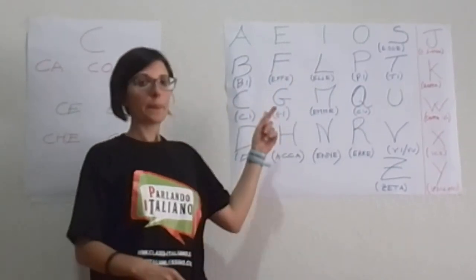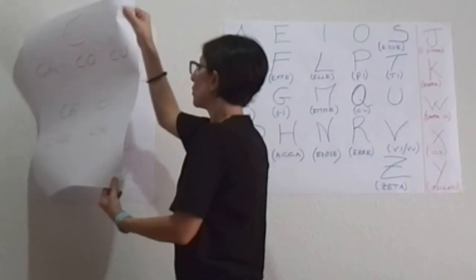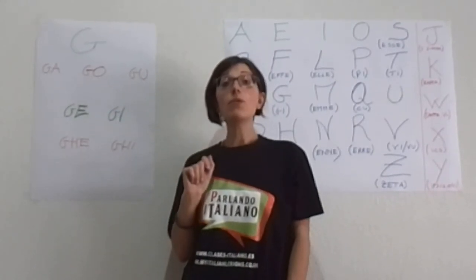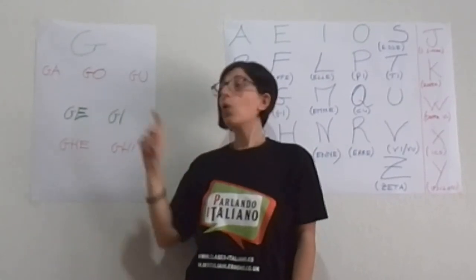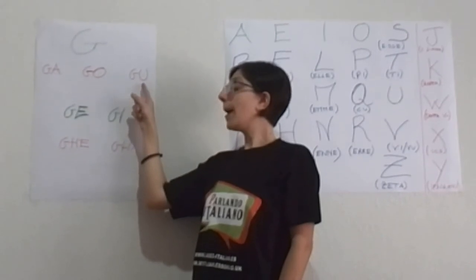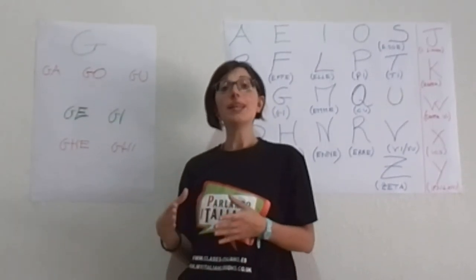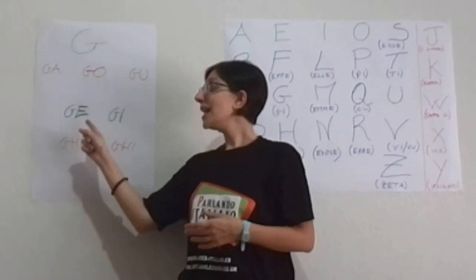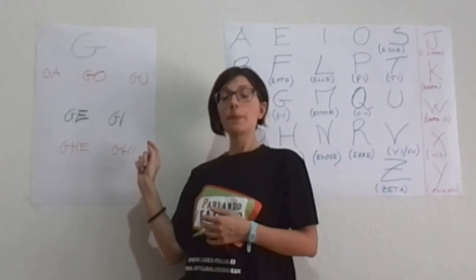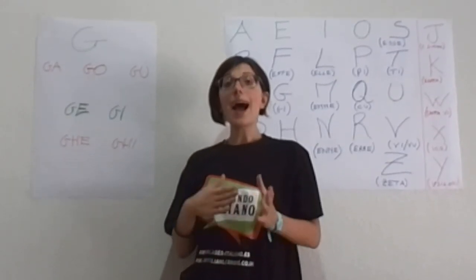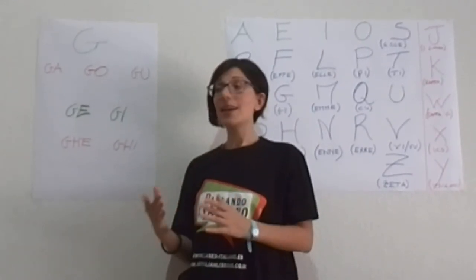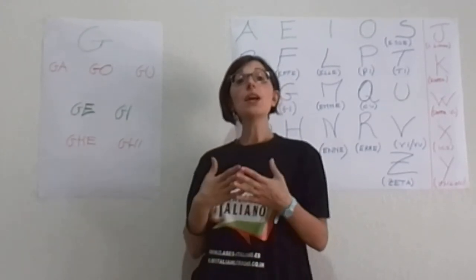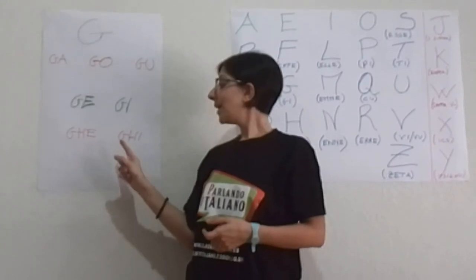The same thing will happen with the letter G. La lettera G si pronuncia G quando è seguita dalle vocali A, O, U. E avremo GATTO, GOL e GUFO. Ma quando la lettera G è seguita dalle vocali E e I, si pronuncerà G come gelato e giallo. Come succedeva per la lettera C, anche per la lettera G, se noi vogliamo cambiare il suono G davanti alle vocali E e I, dovremmo mettere una H. E quindi avremo Ghetto e Ghiro.